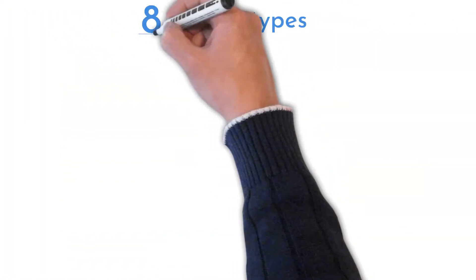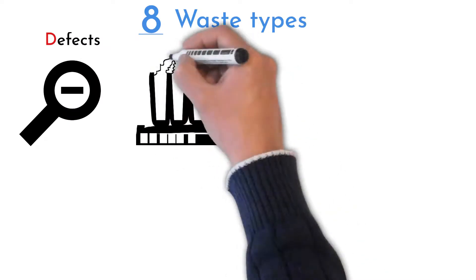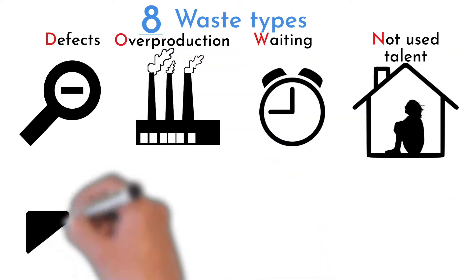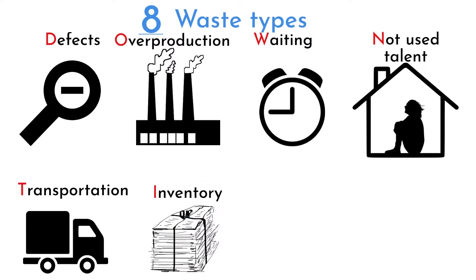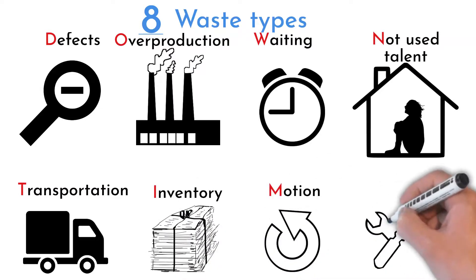There are eight types of wastes: defects, overproduction, waiting, not used talent, transportation, inventory, motion, and extra processing.